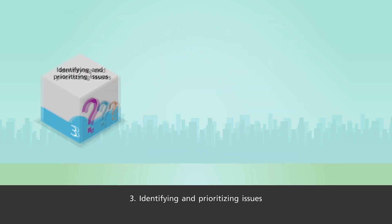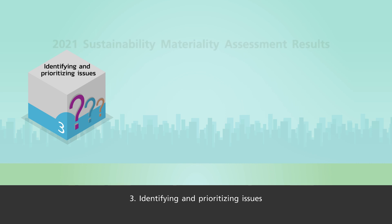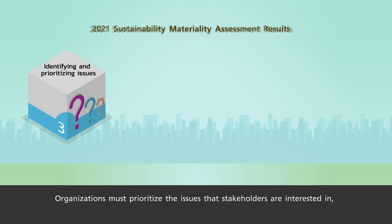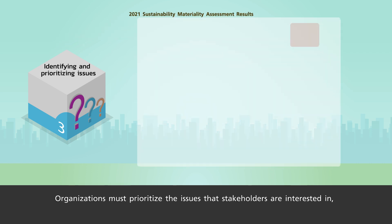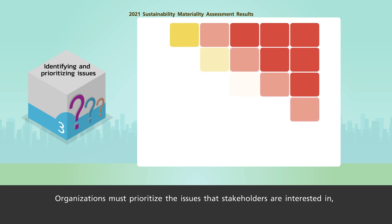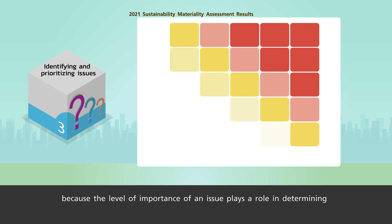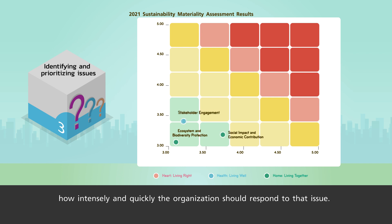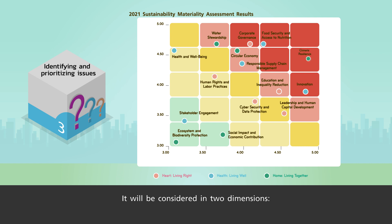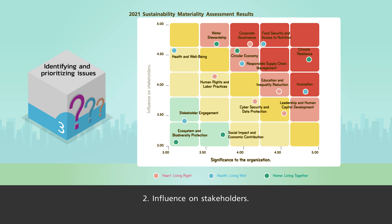Step 3: Identifying and Prioritizing Issues. Organizations must prioritize the issues that stakeholders are interested in, because the level of importance of an issue determines how intensely and quickly the organization should respond. This will be considered in two dimensions: 1. Significance to the organization, and 2. Influence on stakeholders.